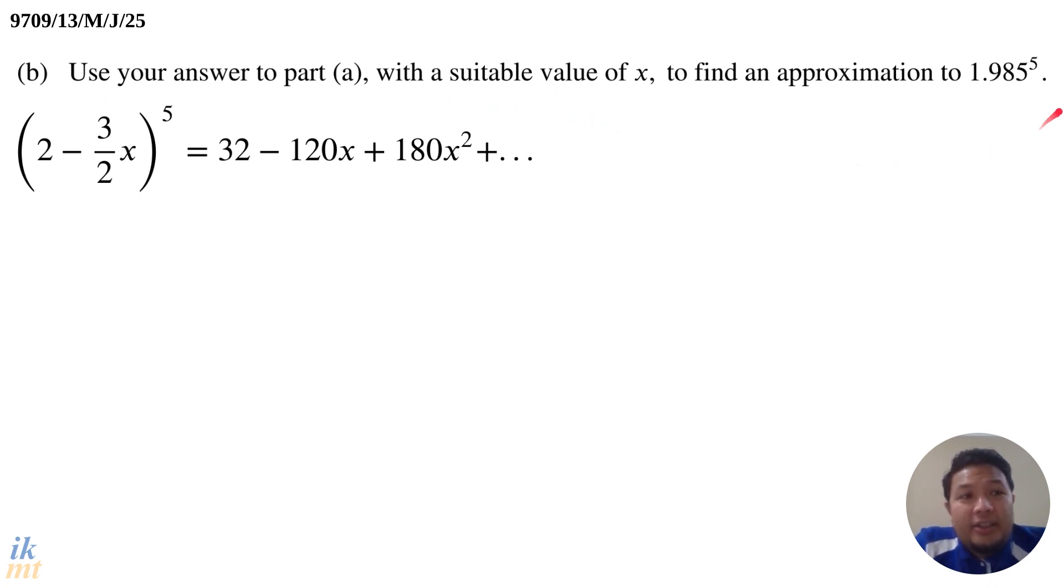Because technically, you can just grab your calculator and press 1.985 power 5 and you will get an answer. But since that is obviously using a calculator, it will not accept that answer. So you will get zero marks if you use your calculator and just type this in. So be careful, don't do that, you must use the binomial expansion. So as you can see here on the left, this is 2 minus 3 over 2x power 5 and we have to find an approximation for 1.985 power 5. That means we can just say, hey, let's say that 2 minus 3 over 2x is actually 1.985.